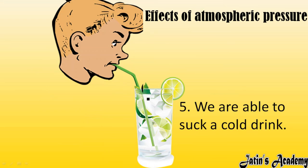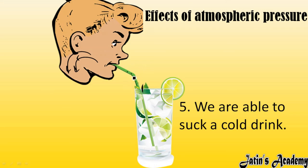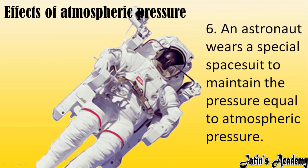Fifth effect: we are able to suck a cold drink through a straw. When we suck, we first move air from our mouth into our lungs, creating a low-pressure region in the mouth. Then air particles inside the straw also move out to our mouth and lungs, creating low pressure in the straw too. Meanwhile, the cold drink liquid is at higher pressure. Since liquids move from higher pressure to lower pressure, the drink rises through the straw into our mouth.